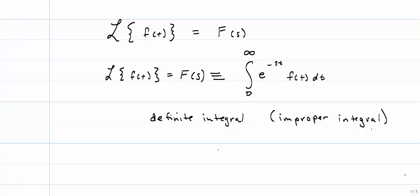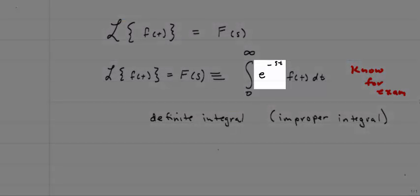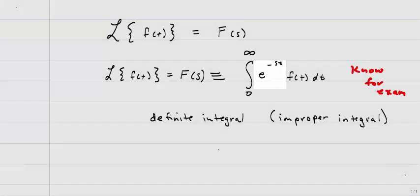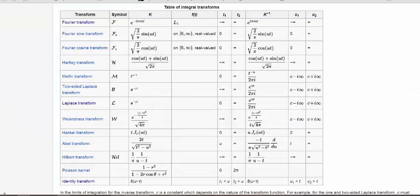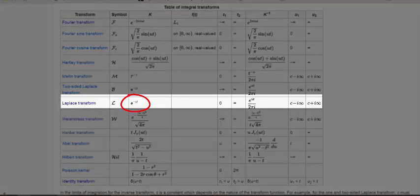If you calculate a Laplace Transform and you end up with a t still left in your function, then you know you've made a mistake, because the result of this integration — because it is a definite integral — you should have no values for t. This is something you need to know for the exam. The part that is known as the kernel is the e to the negative st. If I go back to my list of integral transforms, you see under Laplace the kernel, or k, is e to the negative ut, and the limits of integration are from 0 to infinity.